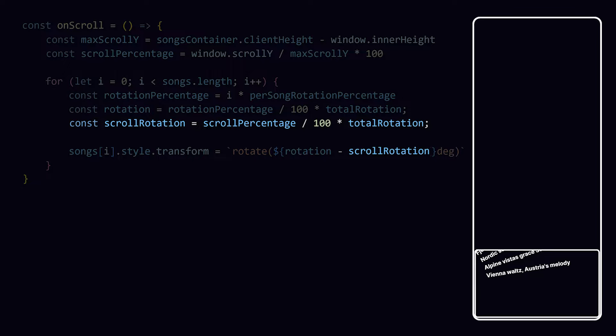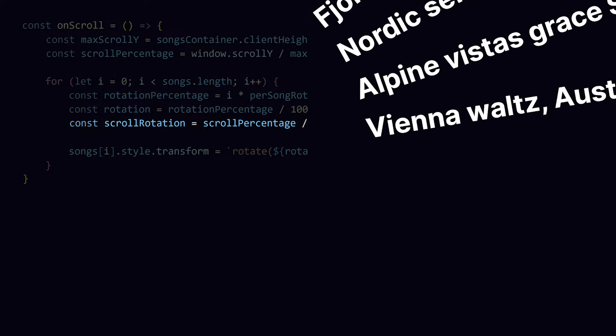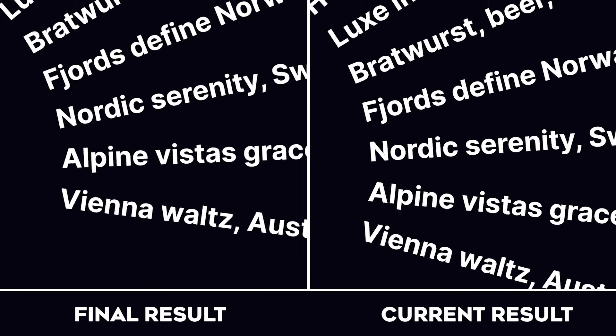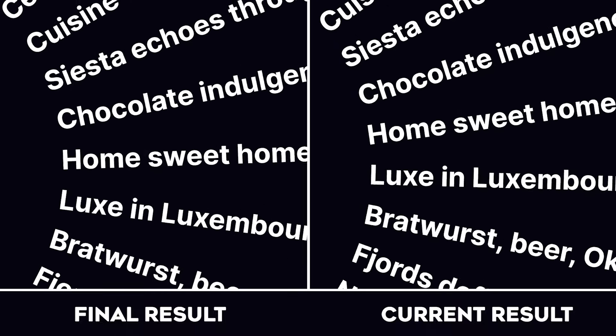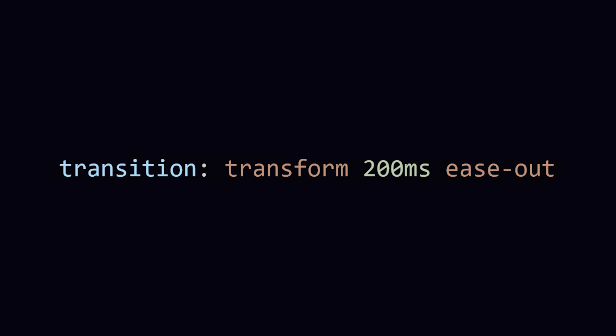We have the percentage value, so we just have to convert that back to 180 degrees. Currently it will exactly rotate based on the scroll position, which is not as smooth as in the example — but we can easily animate it by transitioning the transform property.